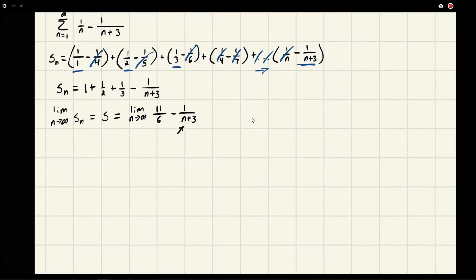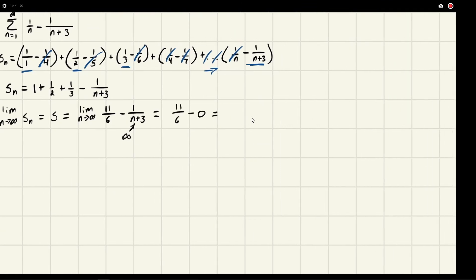And so we're going to get 1 over infinity, which is 0. So we're going to get 11 over 6 minus 0, which is 11 over 6.